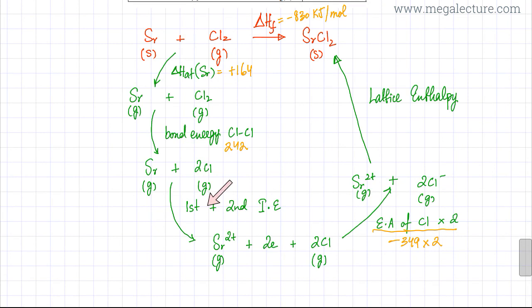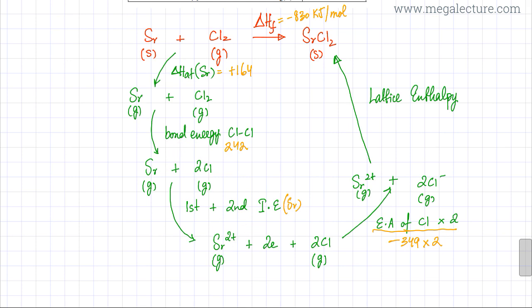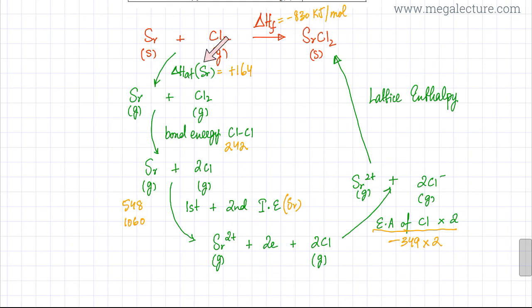We also need the first and second ionization energies of strontium from the data booklet, since we need to remove two electrons to form the Sr²⁺ ion. The values are 548 kJ/mol for the first ionization energy and 1060 kJ/mol for the second. With these, we have all values except the lattice enthalpy.